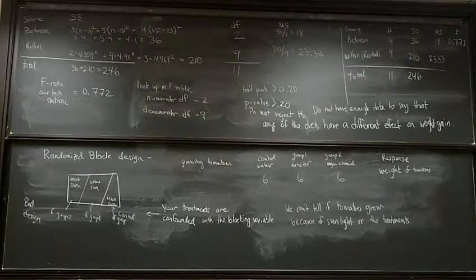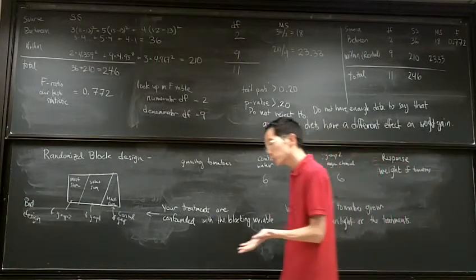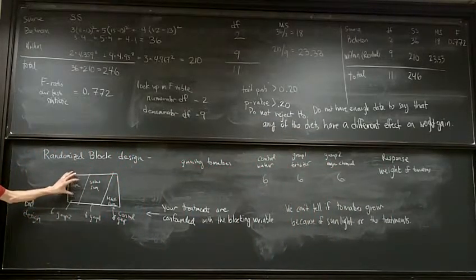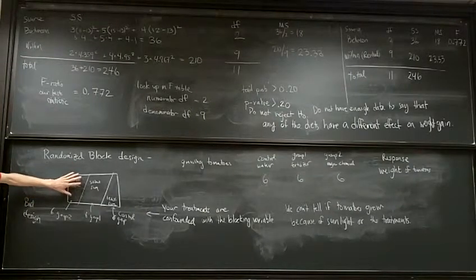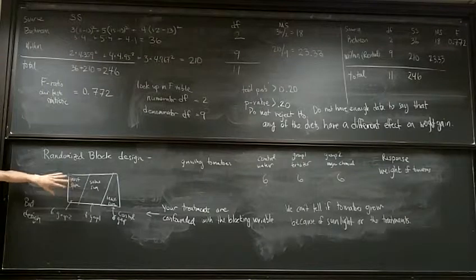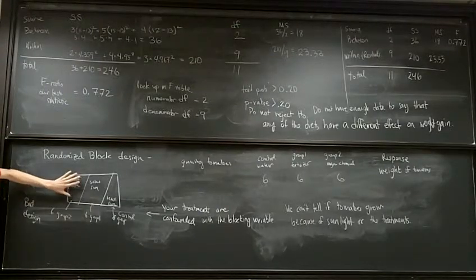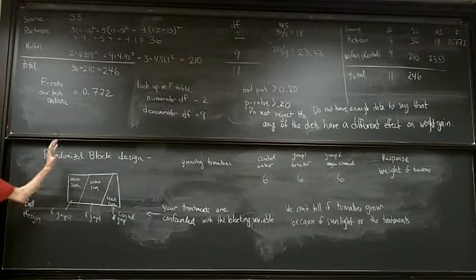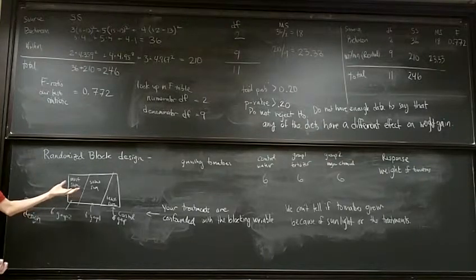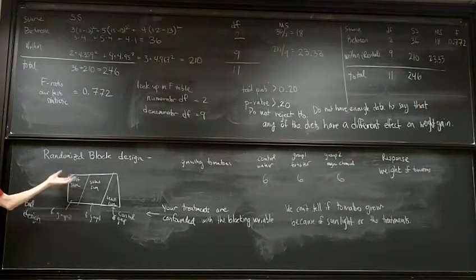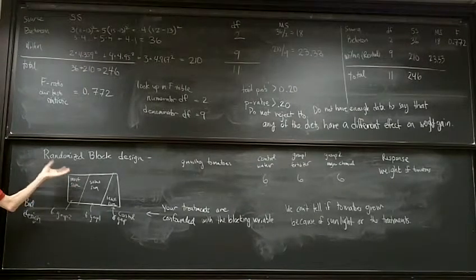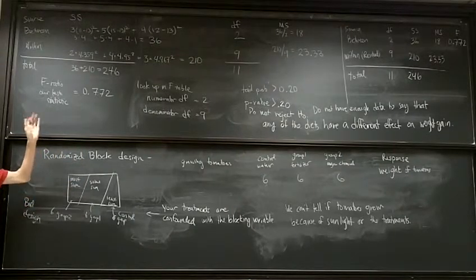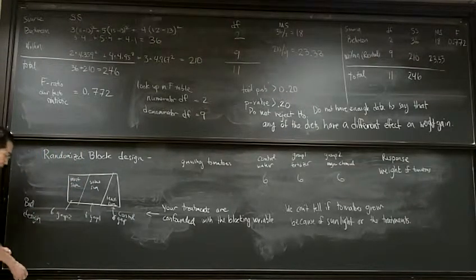If you did a complete random design we could still run into some problems it is possible that by random chance alone a lot of the magic chemical plants let's say four magic chemical plants end up here and one fertilizer and one control plant end up in the most sun area it's possible that that happens by random chance and so at the end of the day when you look at the data again you're not entirely sure if what you're observing is a result sunlight or the chemical or the fertilizer whatever it is that we're looking at.